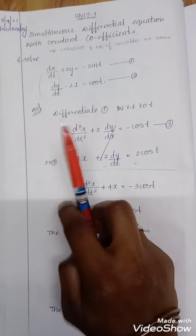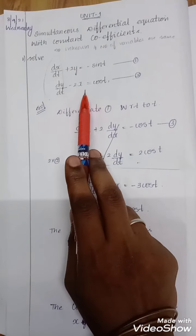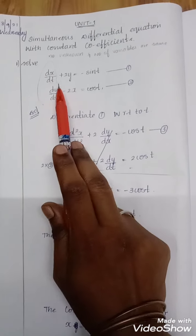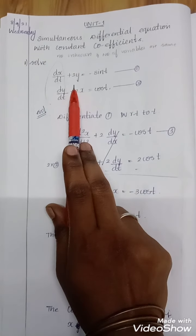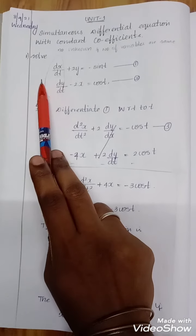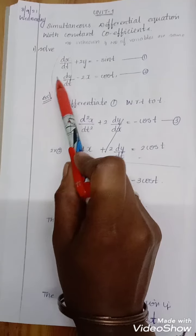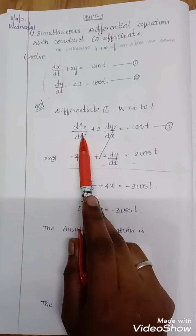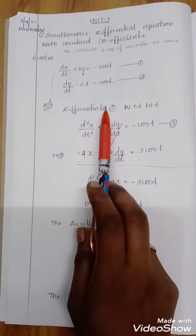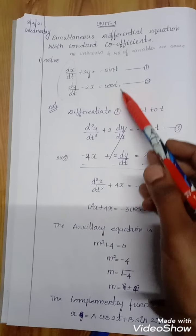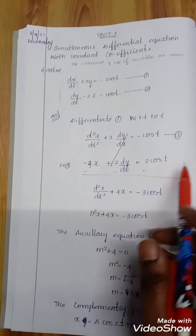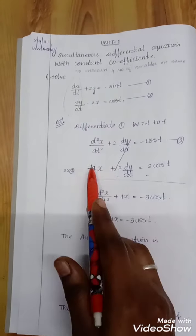I differentiate the first equation: dx/dt + 2y = -sin(t). Differentiating the y term gives dy/dt. So differentiating the whole first equation gives: d²x/dt² + 2(dy/dt) = cos(t). We consider this as the third equation.